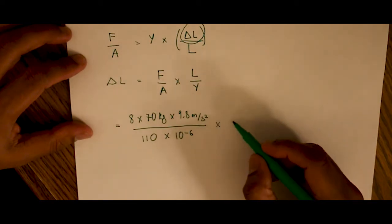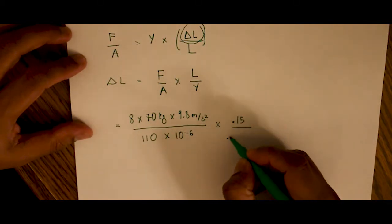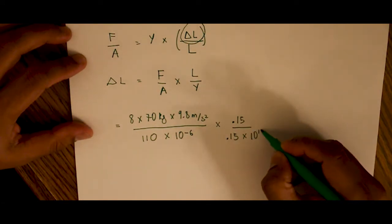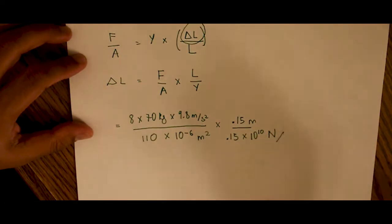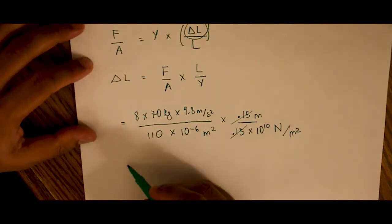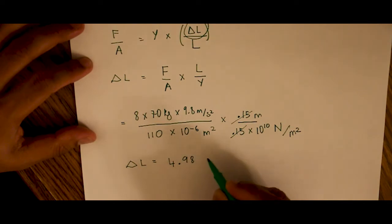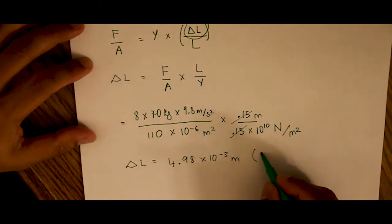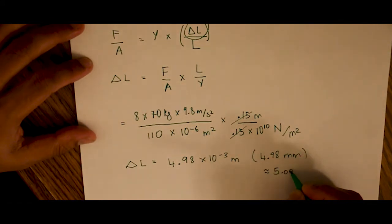The length of the Achilles tendon is 0.15 meters or 15 centimeters and the Young's modulus is given to us as 0.15 times 10 to the 10 Newtons per meter squared. So as we do this calculation we end up with a length of the extension, I already calculated it to be 4.98 times 10 to the negative 3 meters or 4.98 millimeters. It's approximately 5 millimeters.